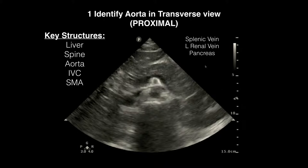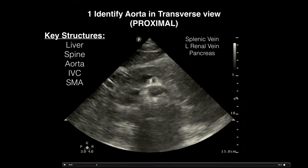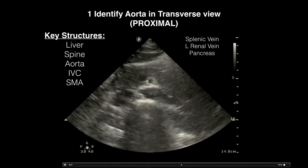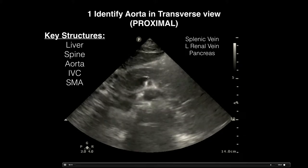Coming down a bit further into the proximal view, look for the liver and spine with its shadowing. Above the descending aorta you'll notice an anechoic round structure — that's your SMA, your superior mesenteric artery. Above that is the splenic vein. You'll also see the IVC with the left renal vein draining into it, and the pancreas enveloping the splenic vein.